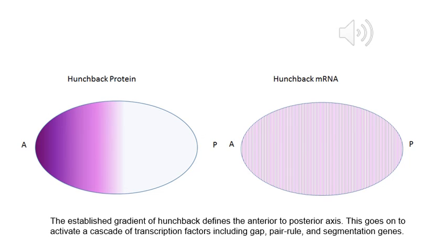This gradient defines the anterior-to-posterior axis and activates a cascade that includes both gap and pair-rule genes to further specify Drosophila regions.